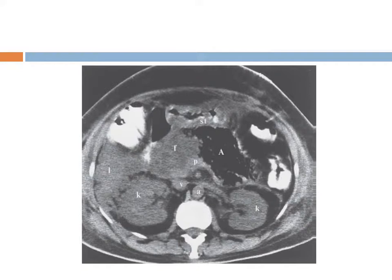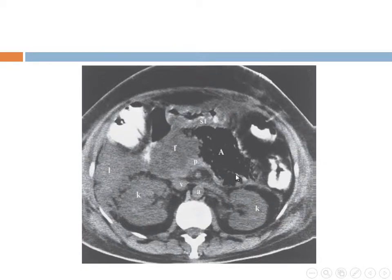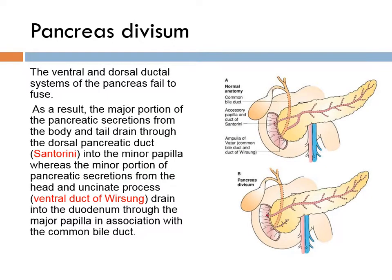Pseudocyst and fluid collection are described separately. We also have pancreatic abscess here — there is air and fluid in the pancreas. The air in the pancreas is either due to pancreatic abscess or a fistula with bowel.